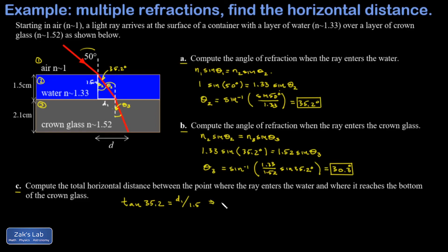Then I do the same thing for d2. That vertical distance is 2.1 centimeters, the angle is 30.3 degrees—we computed that in part b—and the only unknown there is the opposite side d2. I multiply both sides by 2.1 and I get 1.23 centimeters additional distance.